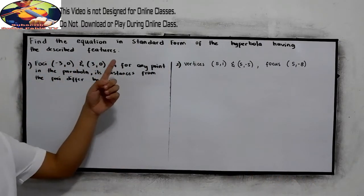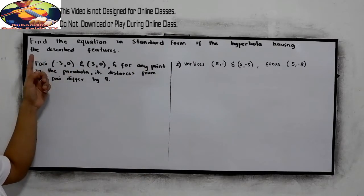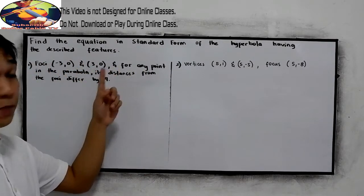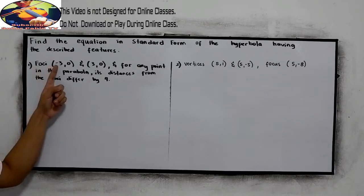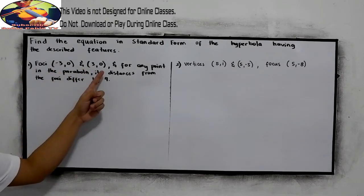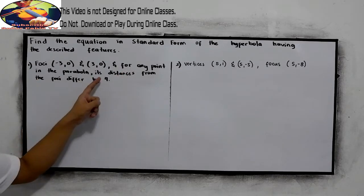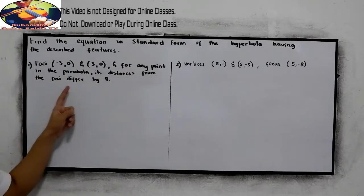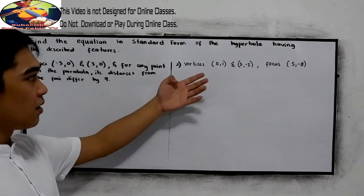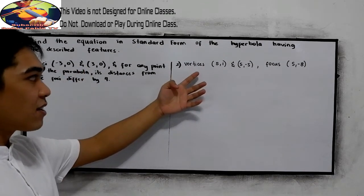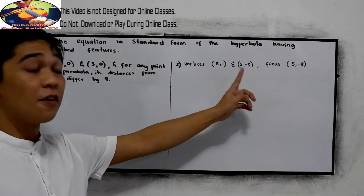Find the equation in the standard form of the hyperbola having the described features. Number one: foci (-3, 0) and (3, 0), and for any point on the parabola, its distances from the foci differ by 4. The second question: vertices (5, 1) and (5, -5), and the focus is (5, 3).